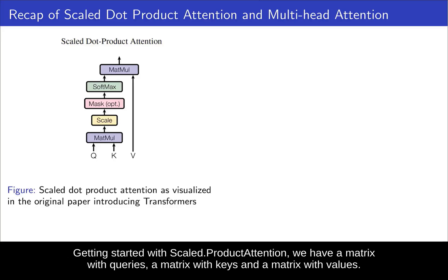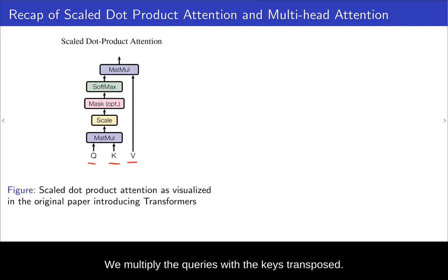So getting started with scaled dot product attention, we have a matrix with queries, a matrix with keys and a matrix with values. We multiply the queries with the keys transposed. We scale by dividing by the square root of the dimension of the embedding. Then we have this optional masking step. It's optional because it only happens in the decoder and only for future positions.